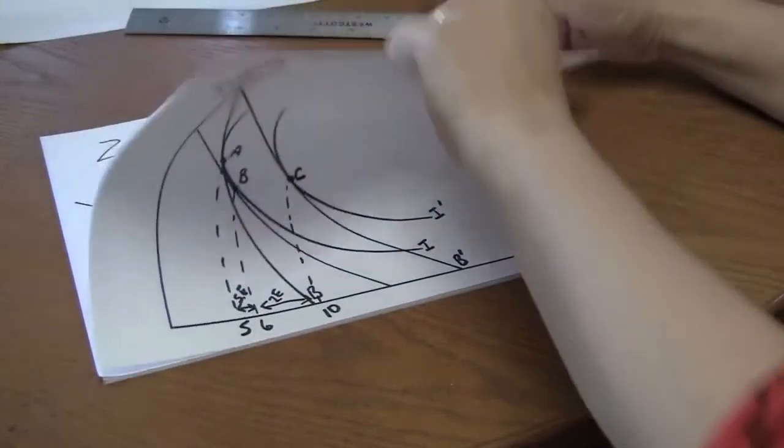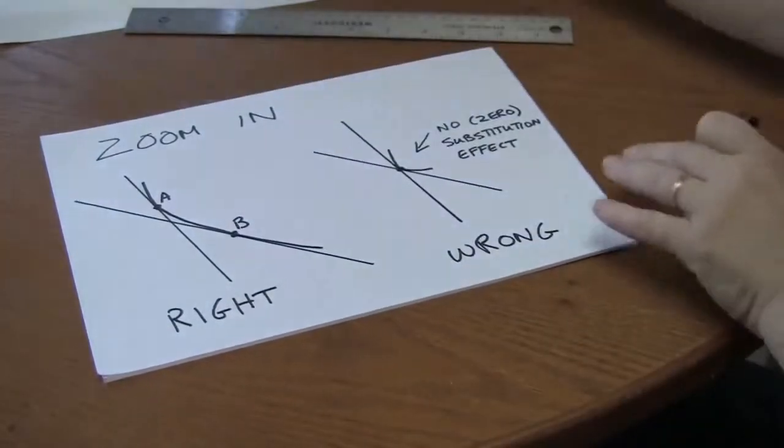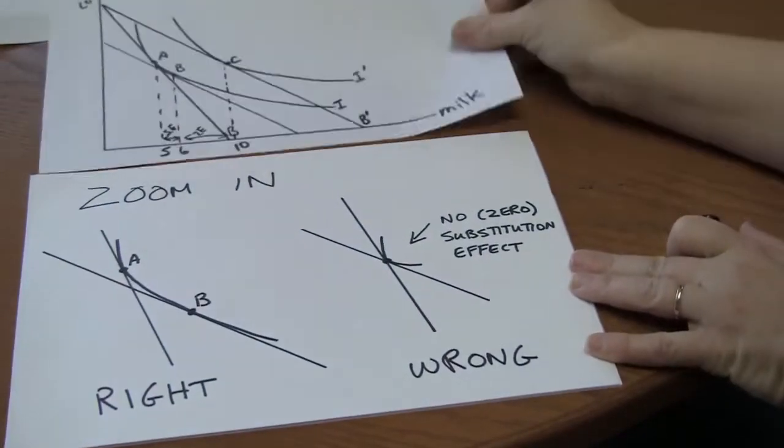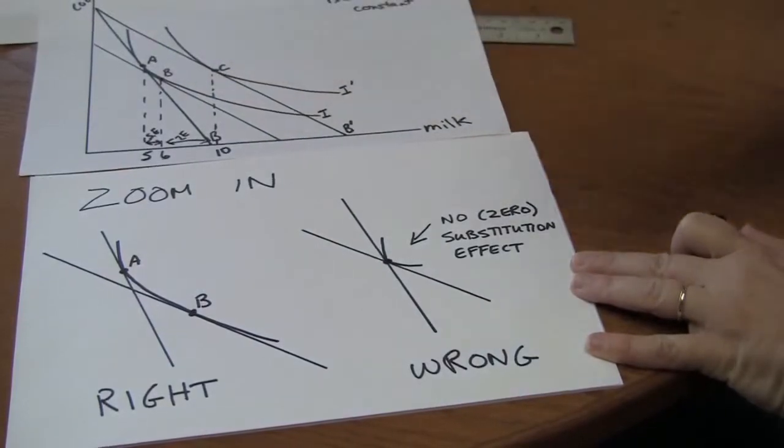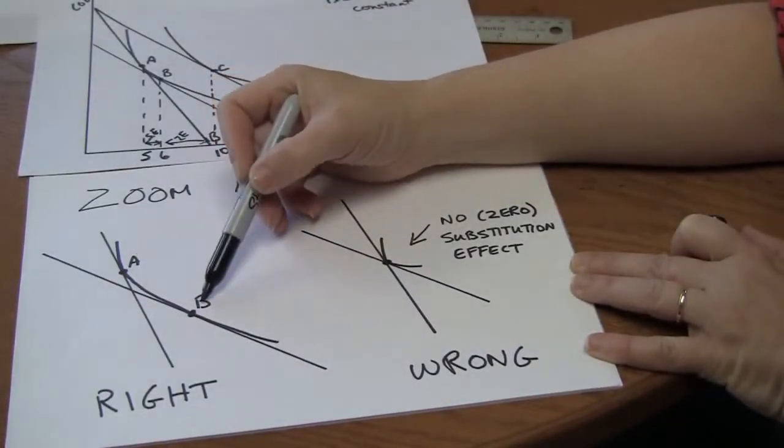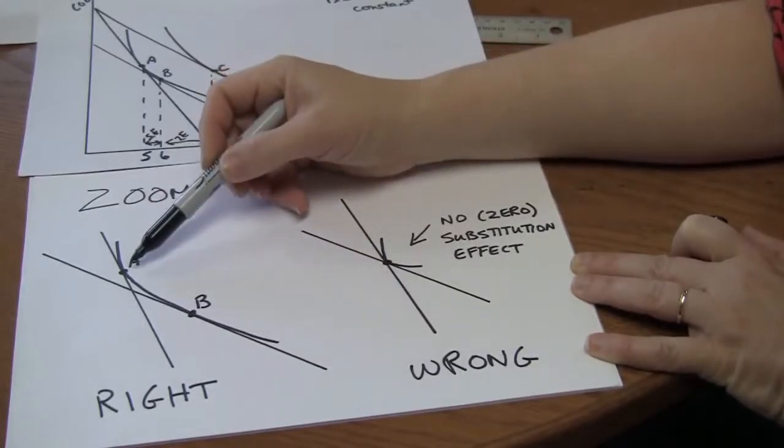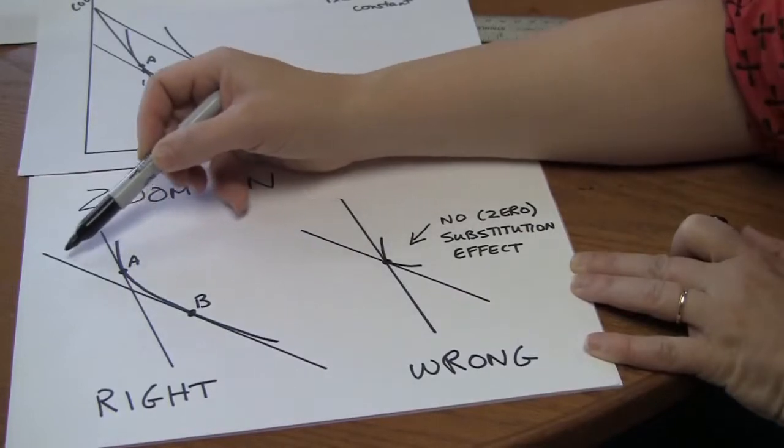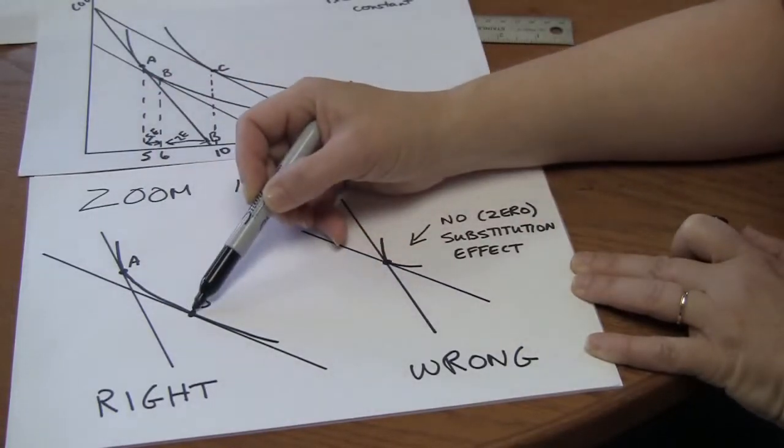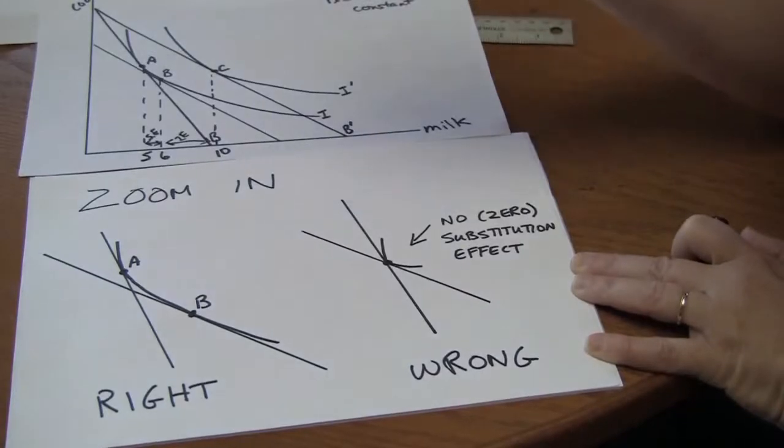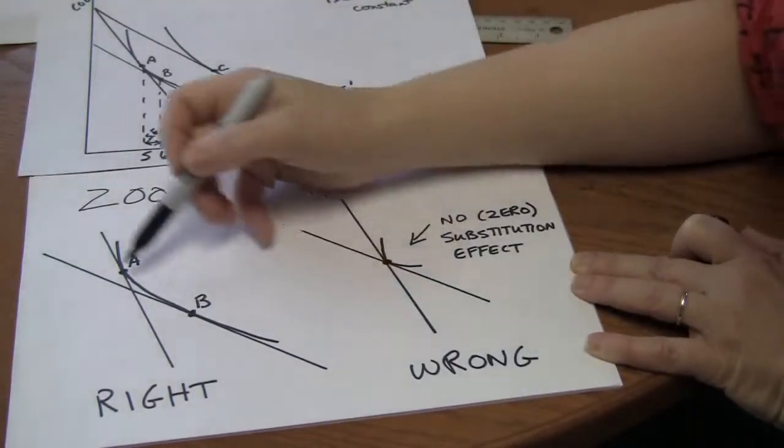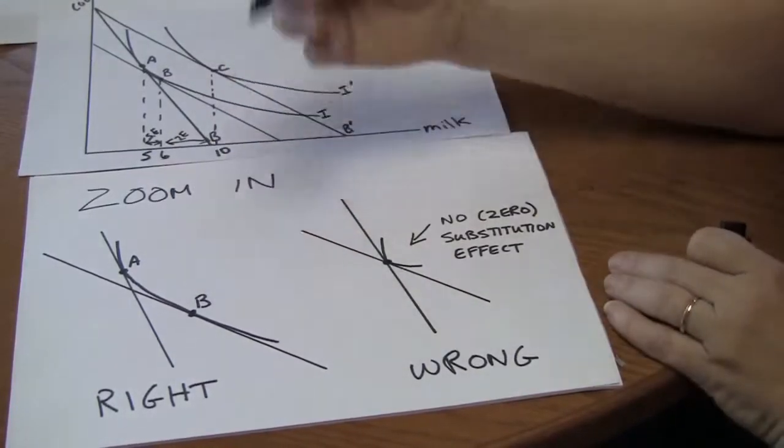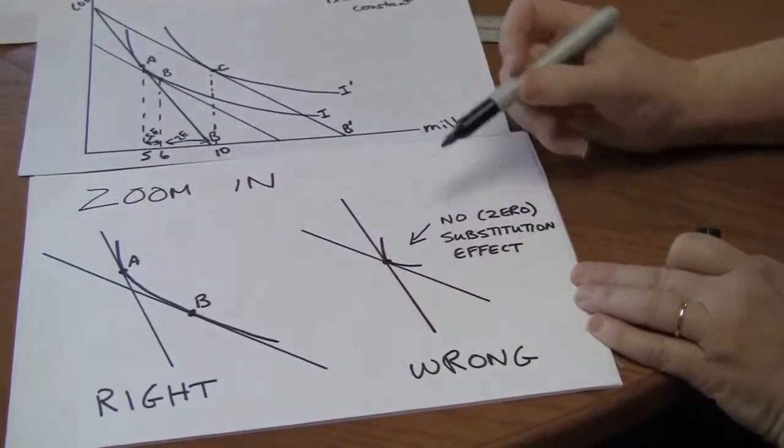One thing to bear in mind when you're doing these. And this is just zooming in. If you think of these points here, A and B. If you zoomed in, the right way to do them would be something like this. With A tangent to the original budget constraint. B tangent to this budget constraint. We've constructed one that has the new relative prices but keeps the consumer on their original indifference curve. That's the right way to draw it.